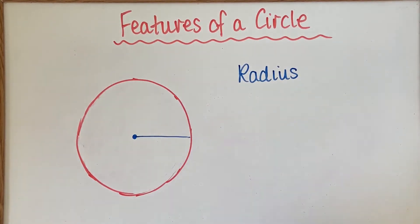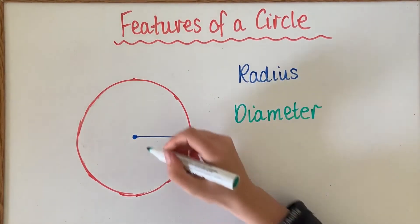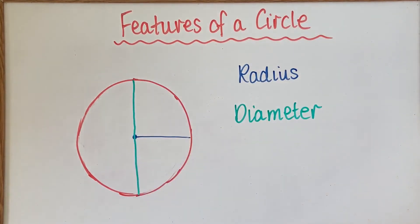The second measurement you want to learn is the diameter. The diameter is similar to the radius except that the diameter goes the whole way across the circle.